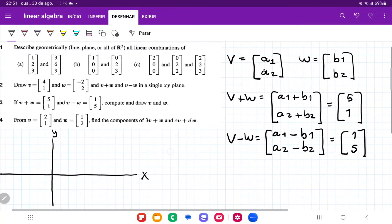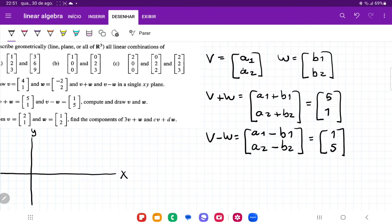So from here, we can make a system of equations. Let's take the variables 1, the lines with variables 1. So we have here that a1 plus b1 is equal to 5, and a1 minus b1 is equal to 1.